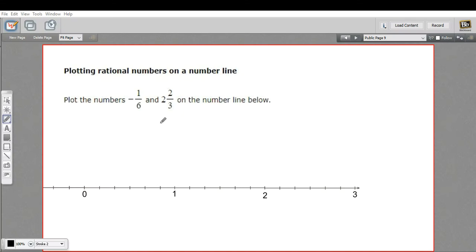In this problem, I'm being asked to plot some fractions, or rational numbers as they're also called, on a number line. I've got negative 1 sixth and 2 and 2 thirds.